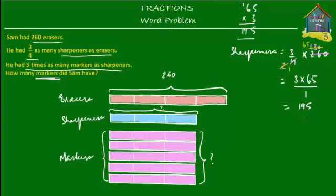So Sam had 195 sharpeners, which means these three blue blocks together are equal to 195.